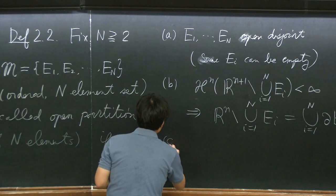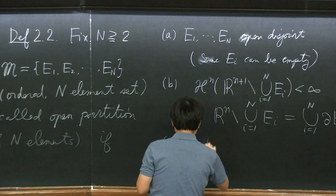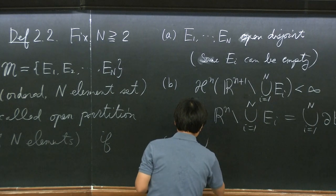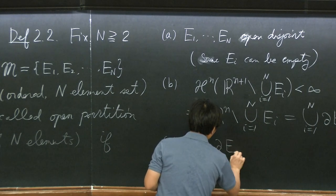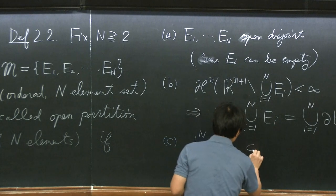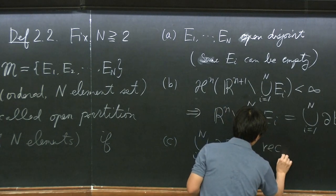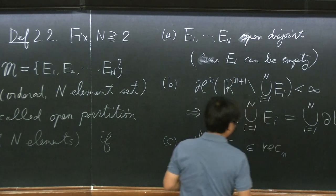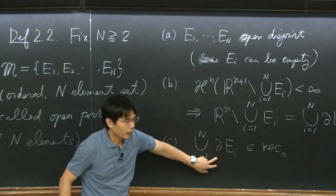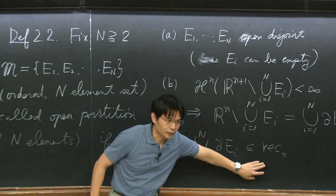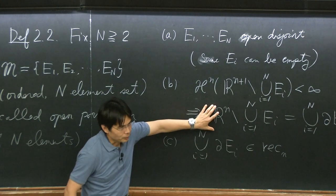And condition C: I ask this set to be countably rectifiable. I want this to be countably rectifiable. Of course, this is a closed set. And also, I ask it to have countable H^n measure — finite measure.